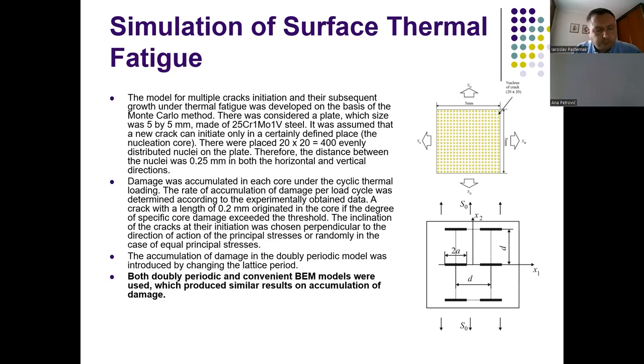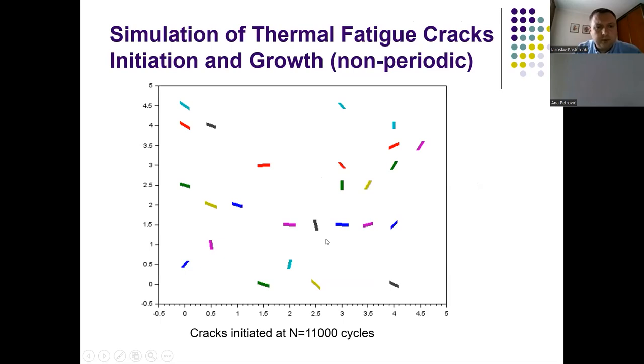Both models were introduced into the boundary element code to determine some parameters. The first model shows crack growth where some cracks have initiated at different points, plotted here with lines of different color. Some cracks have grown, however here we cannot see that growth because the growth is much less than the initiation of the cracks.